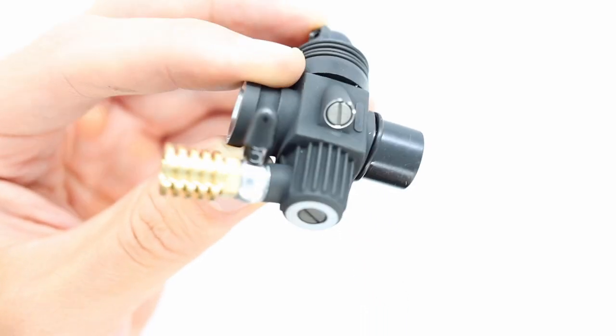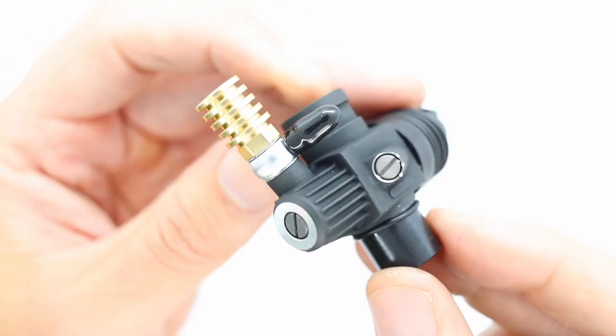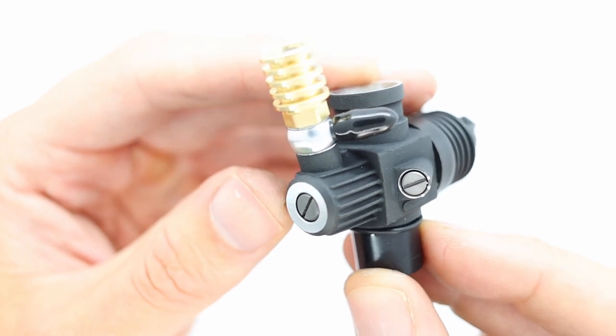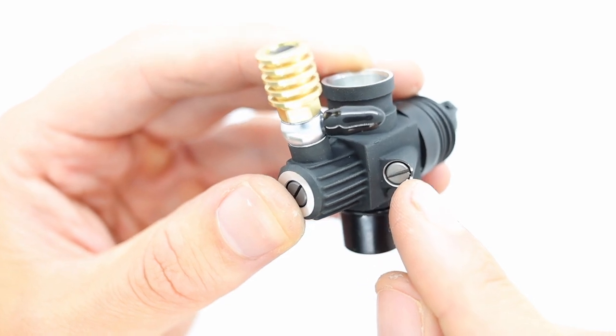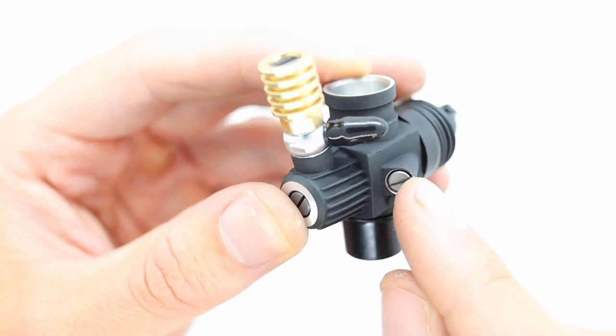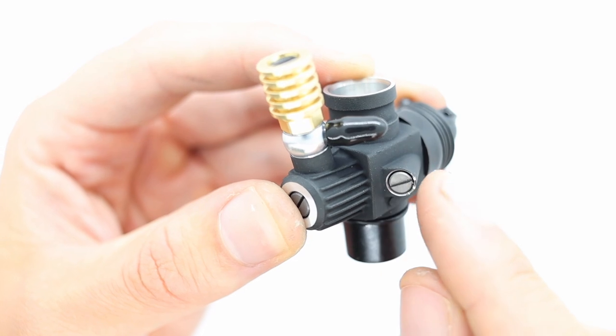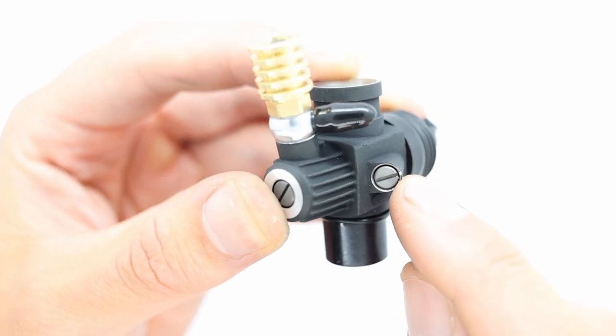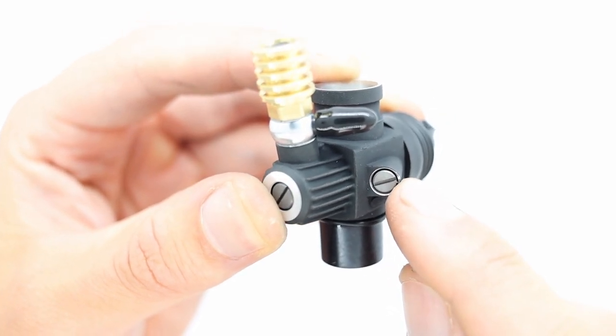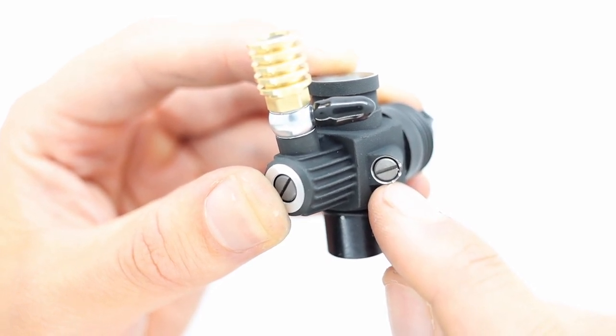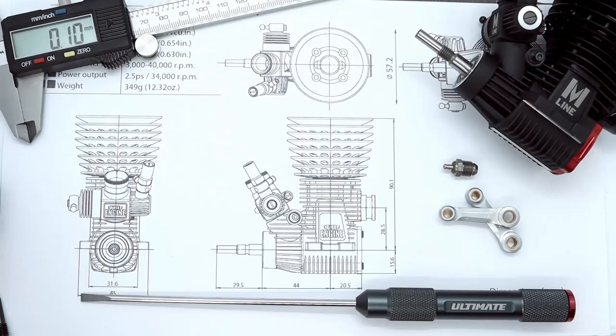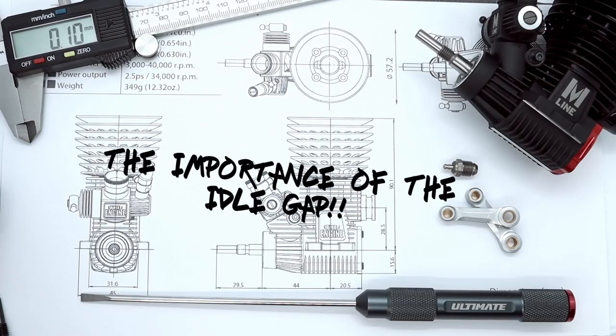So now we know where our idle gap is. Without having to measure it, we can easily see now - the idle gap screw is in the open position. So that means that the idle gap is the smallest, 0.45. So if we close it to there, it's 0.5. Close it to there, it's 0.55.